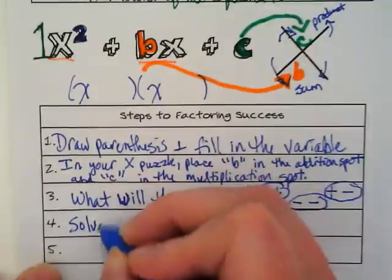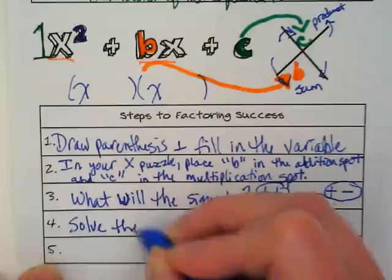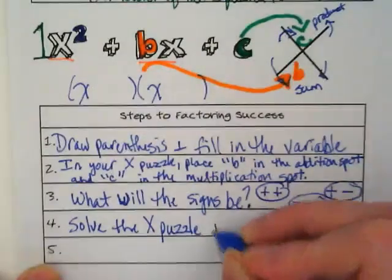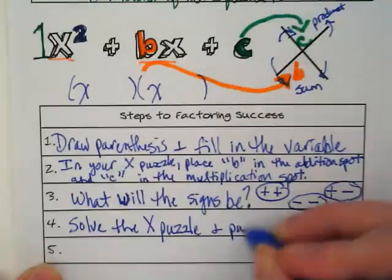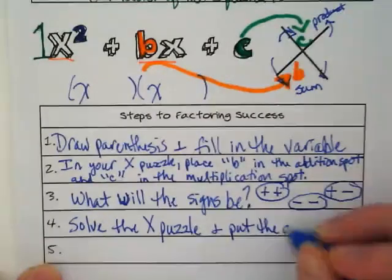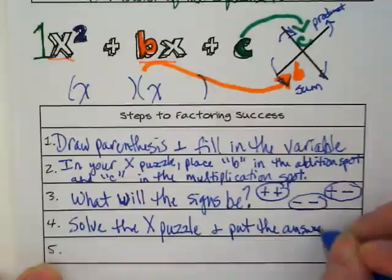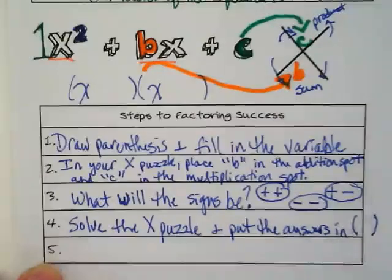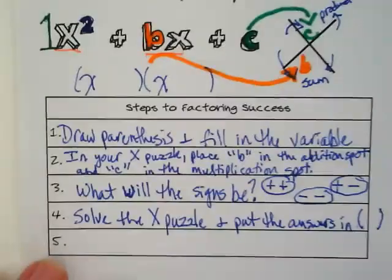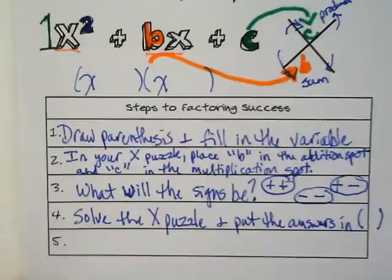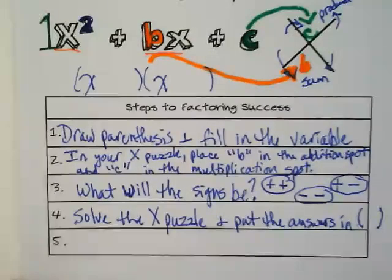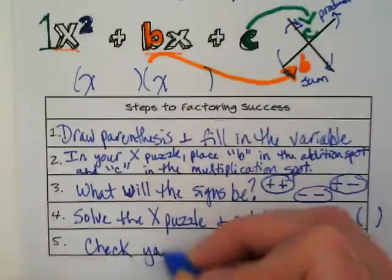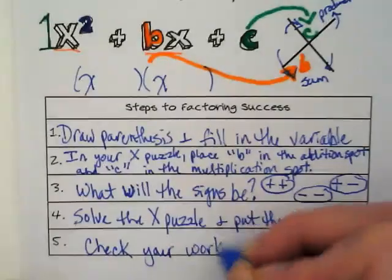Step four: solve the X puzzle and put the answers in the parentheses. And we always check our work, so that is step five: check your work with a matrix.